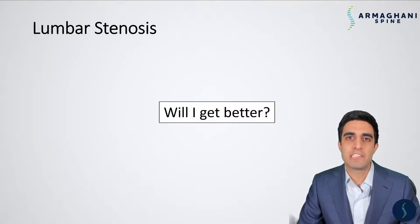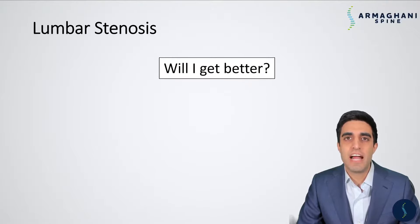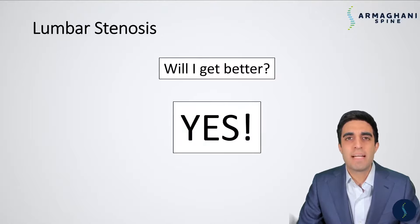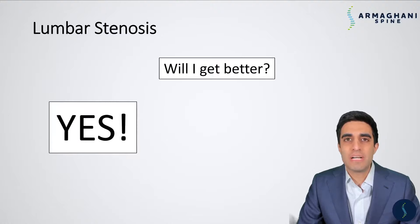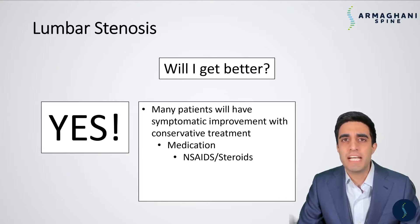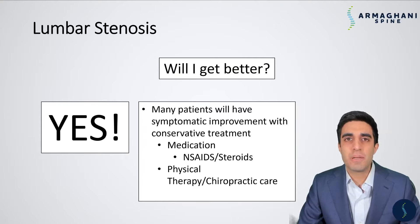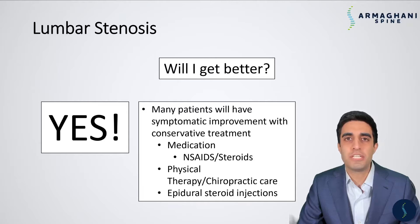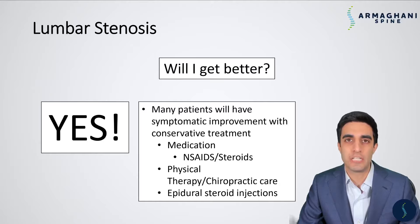Once a patient is diagnosed with spinal stenosis, they frequently ask: will I get better? For the vast majority of patients, the answer is going to be yes. Many patients tend to get much better with conservative care, which can involve medications in the form of anti-inflammatories and steroids. Physical therapy and chiropractic care can help to some degree by keeping you loose, keeping your core strong, and increasing your flexibility. Sometimes you may need a little bit more, and that can involve epidural steroid injections — a local administration of numbing medication and steroid which can help decrease the inflammation related to the physical compression you're experiencing in your lower back.